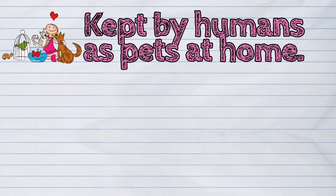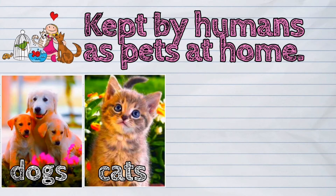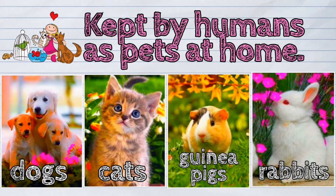There are also animals that are usually kept by humans as pets at home. Some of these are the dogs, cats, guinea pigs, and rabbits. They are called domesticated animals.